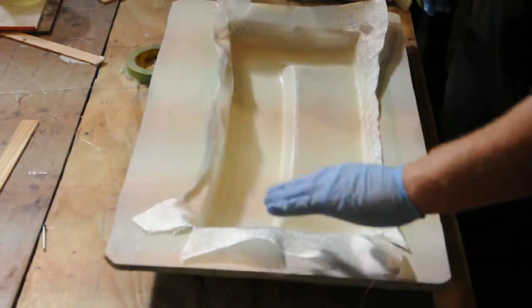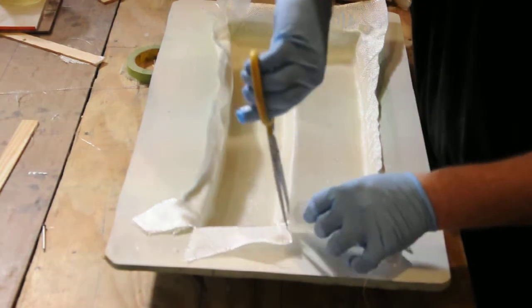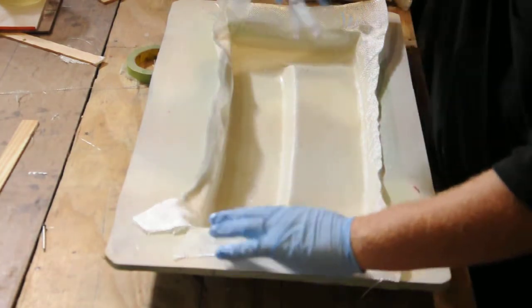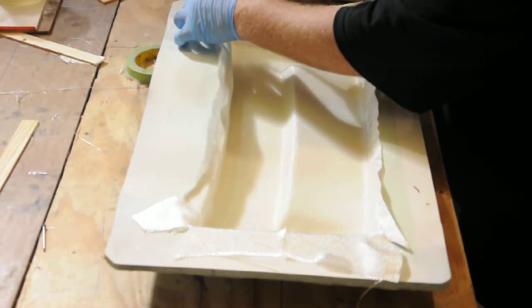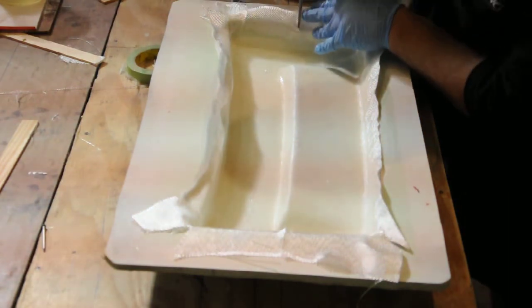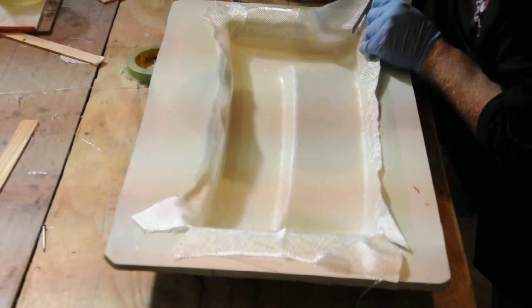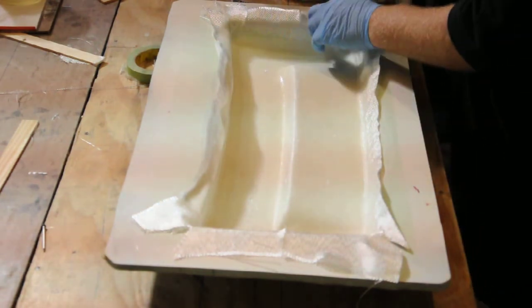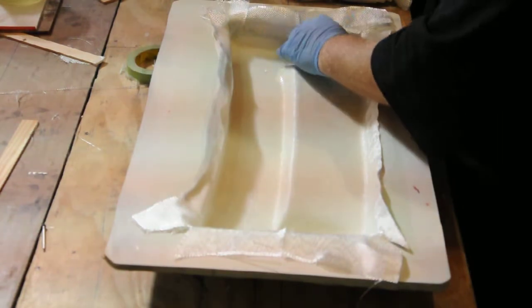You want this thing to lay down over the edges, so you just put a few slices in it starting in the corner and your material will lay down for you.